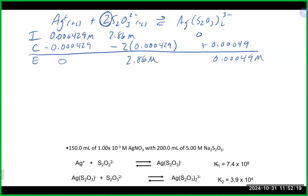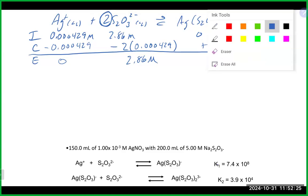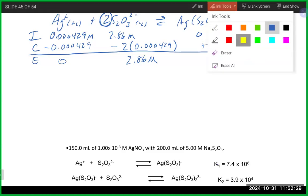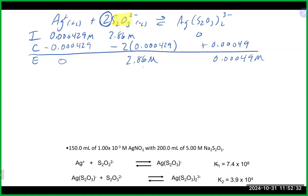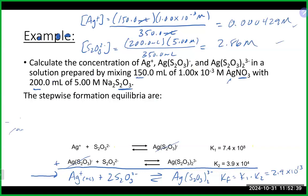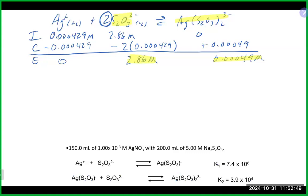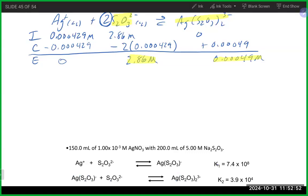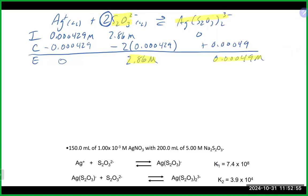At equilibrium we have no free silver, approximately 2.86 M for thiosulfate (since subtracting 2×0.000429 is negligible), and 0.000429 M for the complex ion Ag(S₂O₃)₂³⁻. From this first ICE table we actually already found two of the answers we're looking for: the ligand concentration is 2.86 M and the complex ion concentration is 0.000429 M.